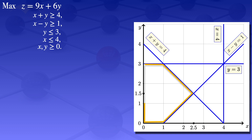I'll start with the first region. I'll take a point in this region — for example, the point (1, 1) — and check if that region satisfies all the constraints. I'll use the red dot at (1, 1) to check.